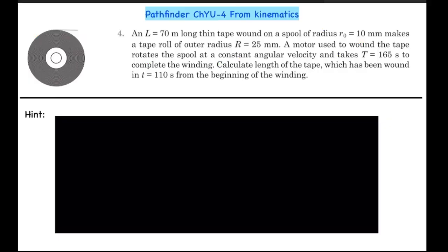Hello guys, here we have question number 4 from the Challenging Understanding Exercise of the chapter Kinematics from Pathfinder. Let's get the question first: An L equals 70 centimeter long thin tape wound on a spool of radius r0 equals 10 millimeter makes a tape roll of outer radius 25 millimeter. A motor used to wound the tape rotates the spool at a constant angular velocity and takes time t equals 165 seconds to complete the winding.